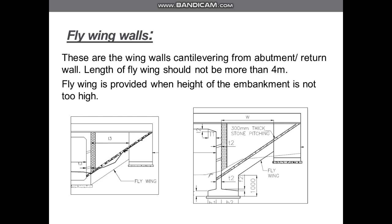The fly wing wall is similar to the return wall, as it also does not have its own foundation. These are wings cantilevering from the abutment or cantilevering from the return wall, as you can see in the picture. For a box structure, it cantilevers from the direct abutment, and for a portal structure, it cantilevers from the return wall.